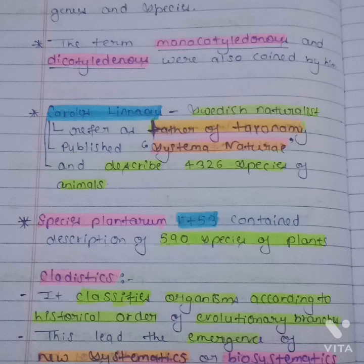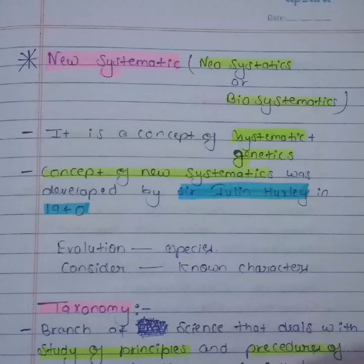The next topic is cladistics, which classifies organisms according to historical order or evolutionary branches. This led to the emergence of new systematics, also known as biosystematics. New systematics is a concept combining systematics and genetics. The concept of new systematics was developed by Sir Julian Huxley in 1940.